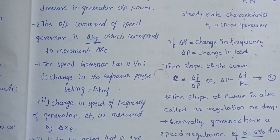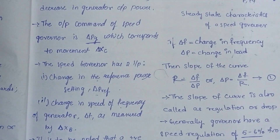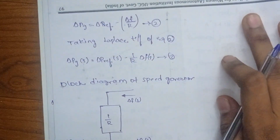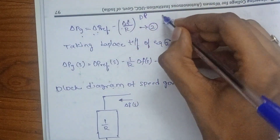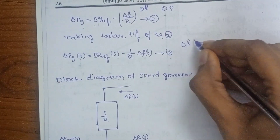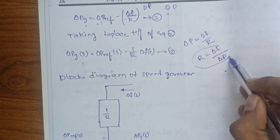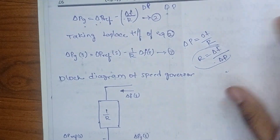The output of the speed governing mechanism is the difference between the reference and change in load. The derivation gives: delta P equals delta P reference minus delta P_N. Substituting, delta P equals delta P reference minus delta F divided by R. The slope of the curve is decreasing, so the equation becomes delta F by delta R for the second equation.